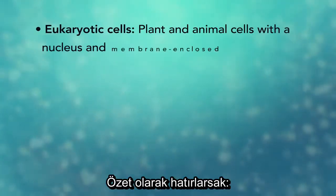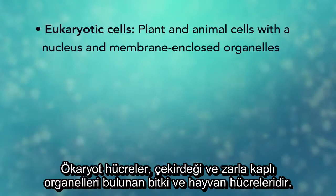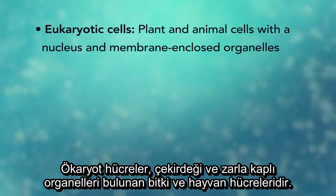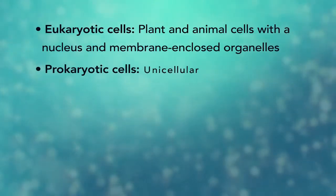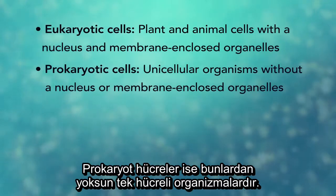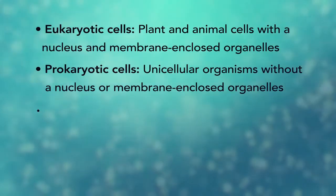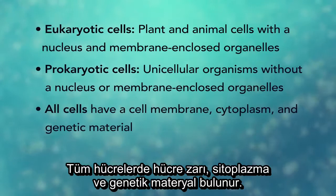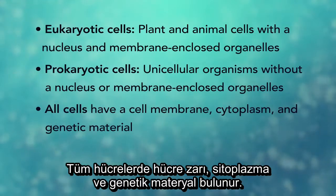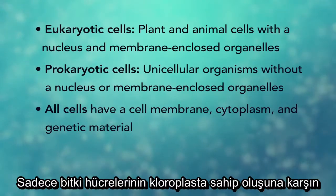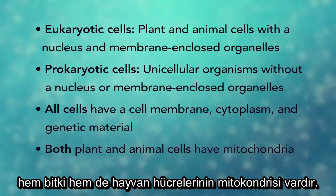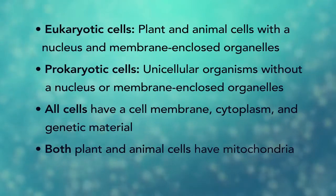In summary, remember: eukaryotic cells are plant and animal cells with a nucleus and membrane-enclosed organelles, while prokaryotic cells are unicellular organisms without these things. All cells have a cell membrane, cytoplasm, and genetic material. And even though only plant cells have chloroplasts, both plant and animal cells have mitochondria.